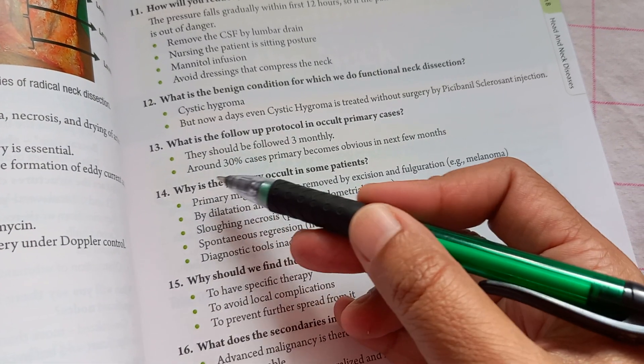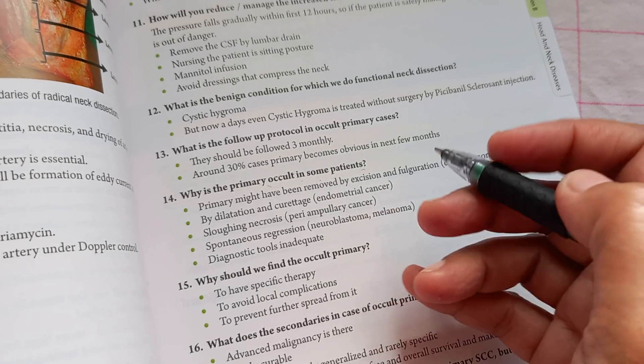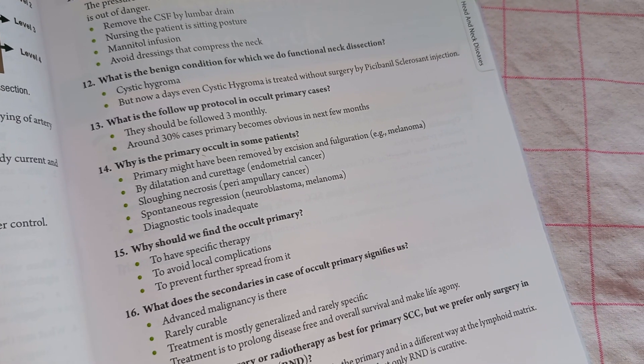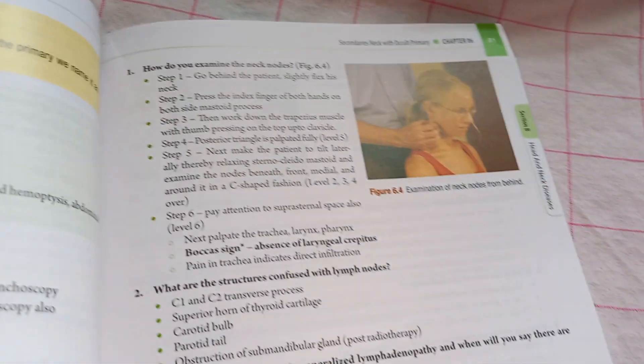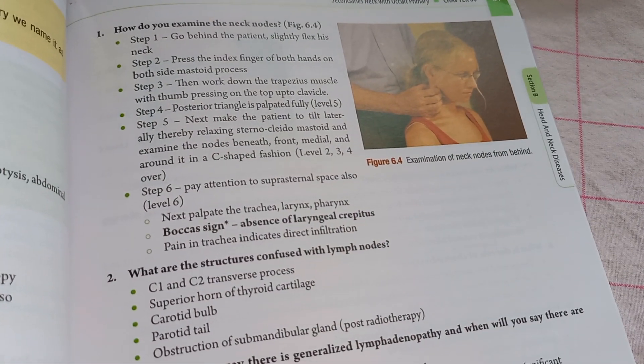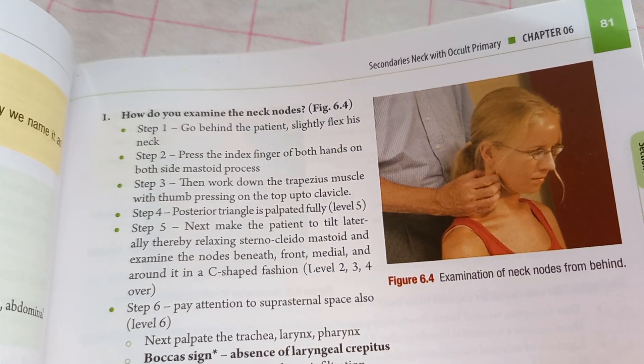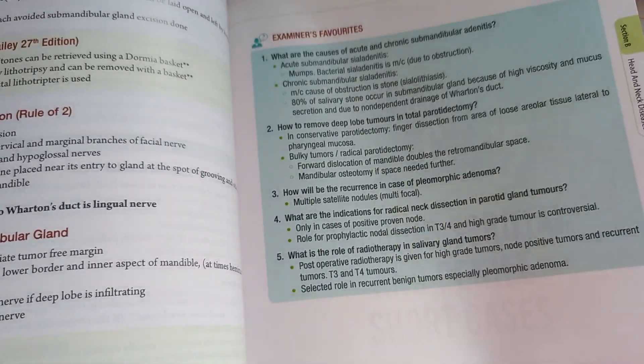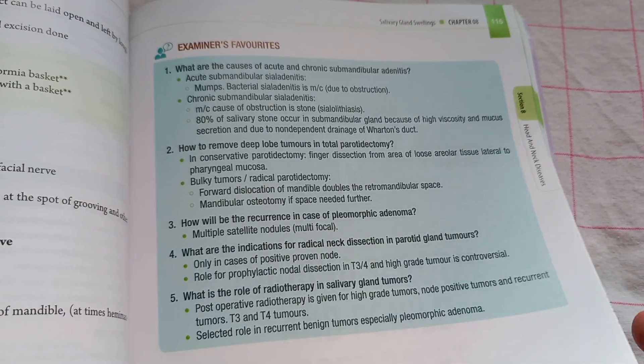Why is the primary occult in some patients? What are they talking about? Melanoma, skin cancer, is it? Looks like neck, head and neck actually. Occult primary. Neck with occult primary. Secondary is neck with occult primary. So what are these questions? Answers also, they're giving. Examiners' favorite question with answers.